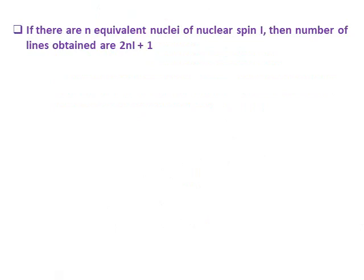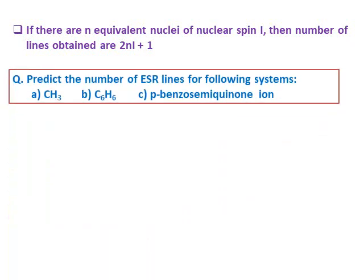If there are N equivalent nuclei each with nuclear spin I, then the number of ESR lines is given by 2NI+1, where N is the number of equivalent nuclei and I is the spin quantum number.